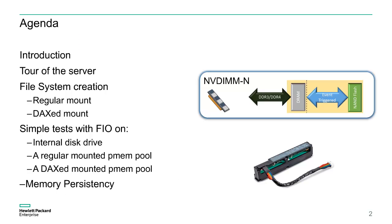After a quick tour of the server, we will review the BIOS parameters related to NVDIMs from the Linux operating system. Different file system operations on those components will be performed, introducing and demonstrating the Direct Access Mount option, also known as DAX. A basic microbenchmark comparing simple random reads and writes gives an idea of the potential performance increase when accessing this technology versus a regular hard disk. The last part of this demonstration simulates a power cut. After reboot of the server, we will make sure that no data were lost and thus validate the persistence side of this technology.